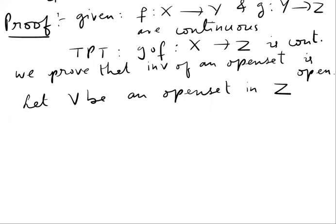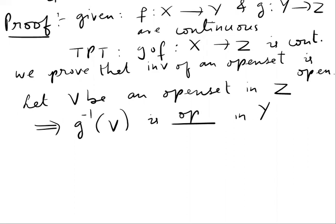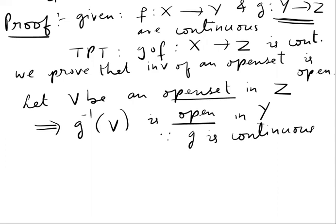Since g is continuous, g inverse V will be open in Y. Because V is an open set in Z and g is continuous, the inverse of an open set is open. So g inverse V is open in Y.